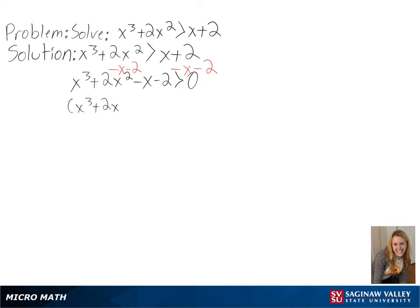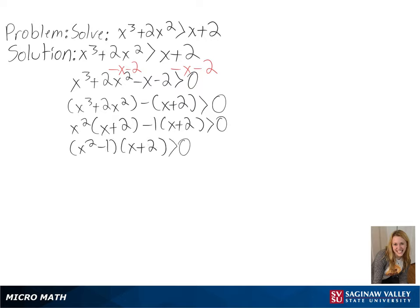Then we need to factor our equation to identify the zeros of the expression. We can do this by grouping. First we can separate our expression and take out an x plus 2, so we can factor to get x squared minus 1 and x plus 2. Then we can further factor x squared minus 1 to get an x plus 1 and an x minus 1. So we get x plus 1 times x minus 1 times x plus 2 is greater than 0 as our equation in factored form.